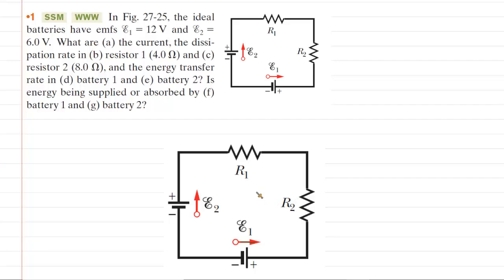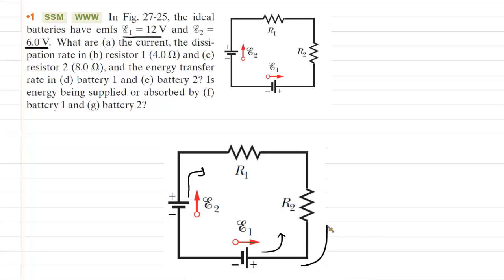Our first step in analyzing this circuit is to draw in the current. The batteries are oriented in opposite directions. Battery two's EMF is pointing in a clockwise orientation and battery one's EMF is pointing in a counterclockwise orientation. Since the EMF of battery one, which is 12 volts, is greater than battery two, battery one will win this tug of war, forcing the current to flow in the counterclockwise direction.